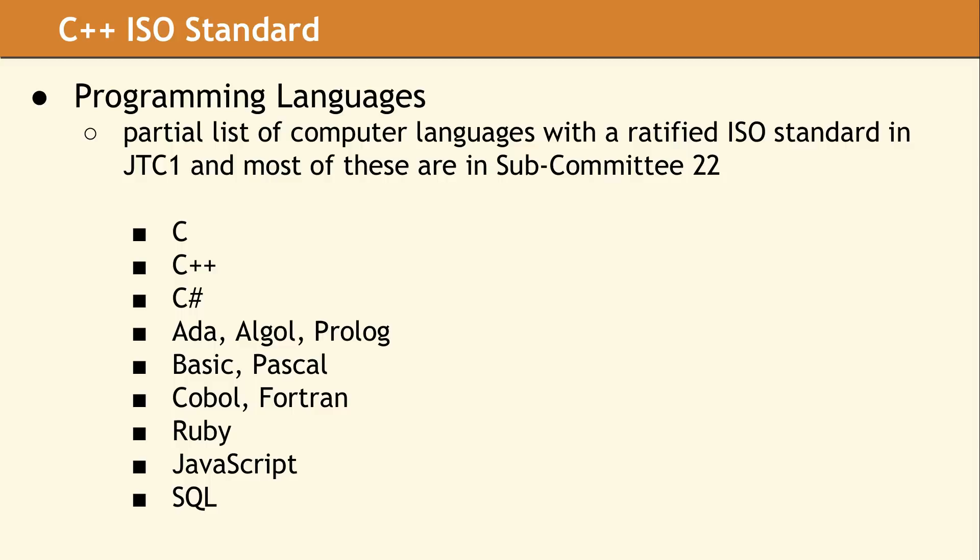Some languages like Java and D do have a formal specification document which is produced by the designer, but it is not an international standard. Other languages like Objective-C have no formal definition, and are implemented by a single vendor with no outside input.